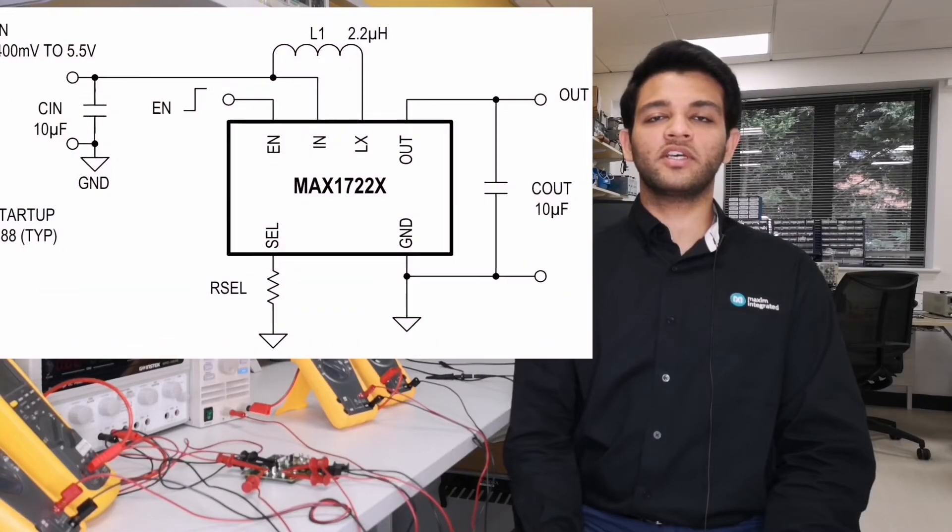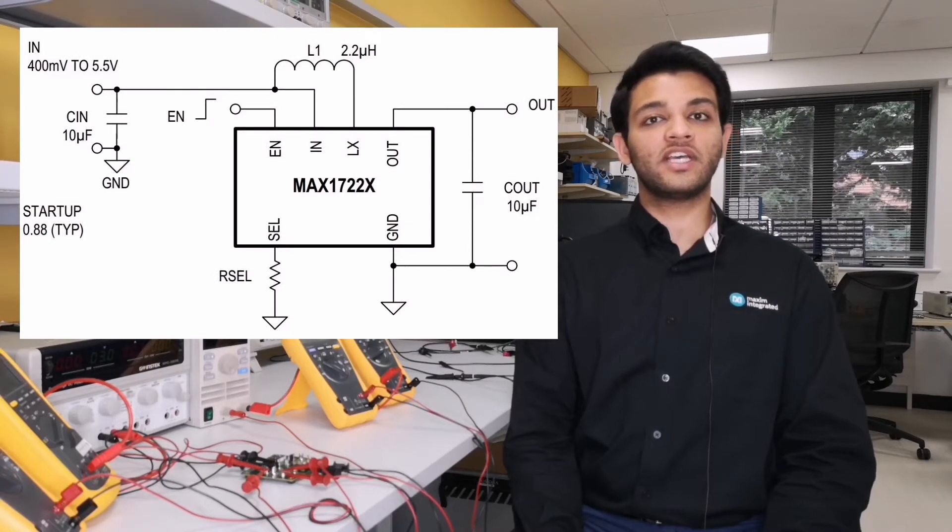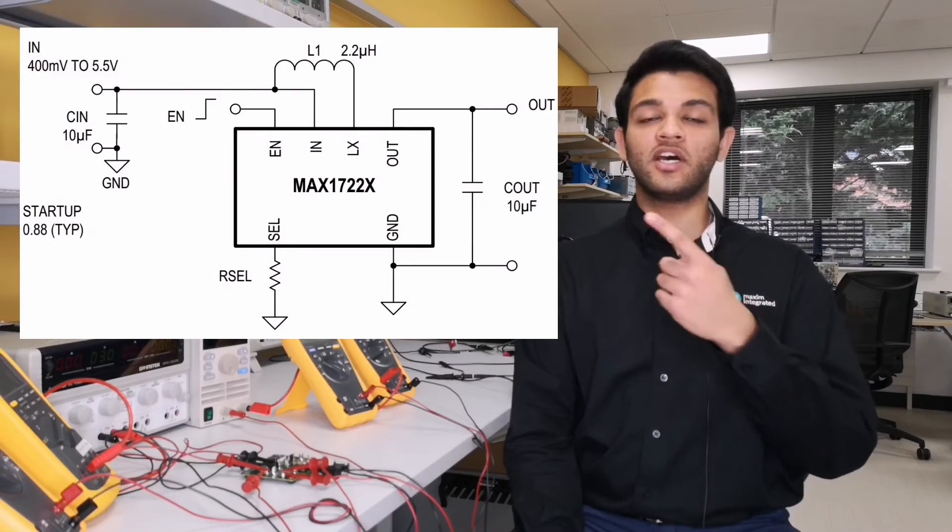The best thing about using this part is that configuration of the output voltage is as simple as changing one resistor right here, that is R-select.